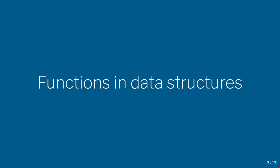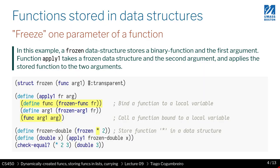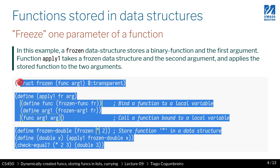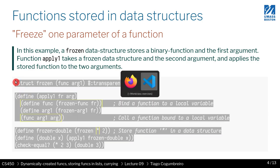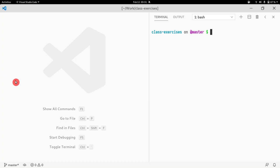The next thing we want to cover is storing functions in data structures, and why would we need that? As an example, consider the following code which I'm going to copy-paste and place in a new file. We'll do this as a struct example.